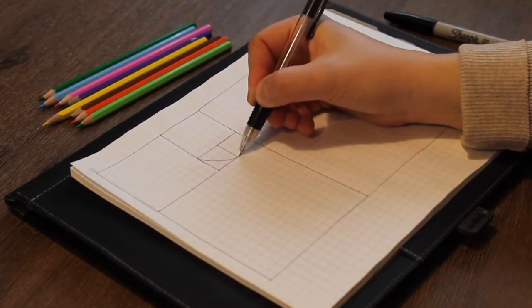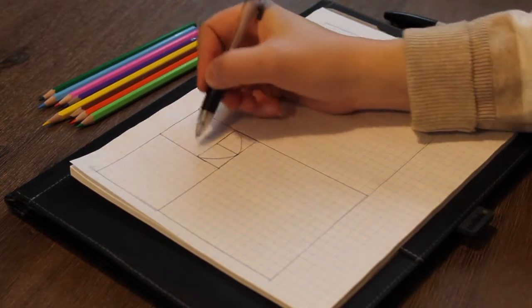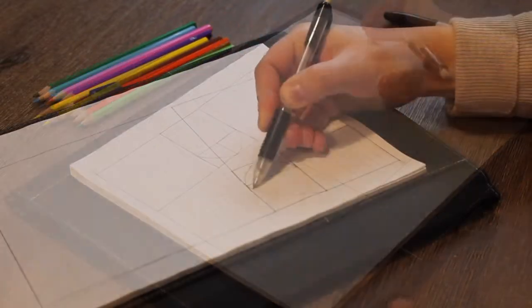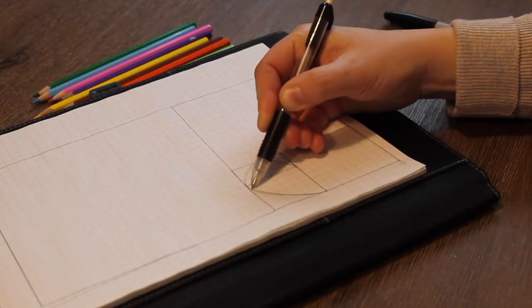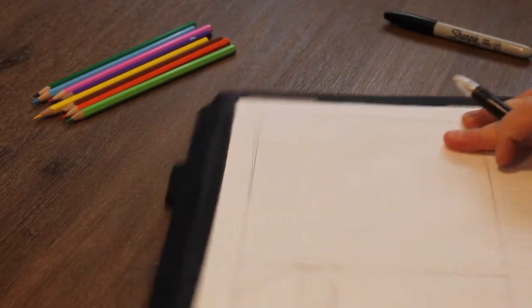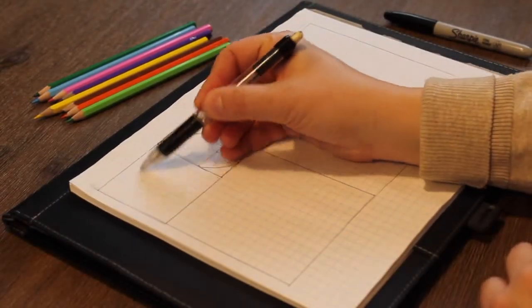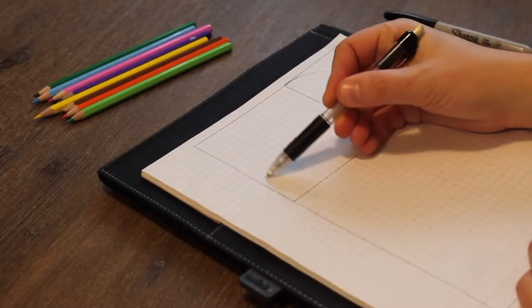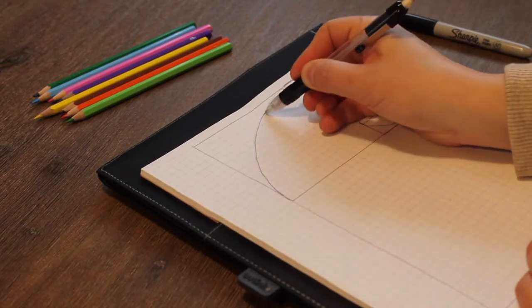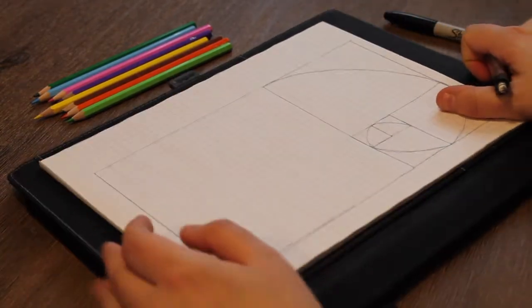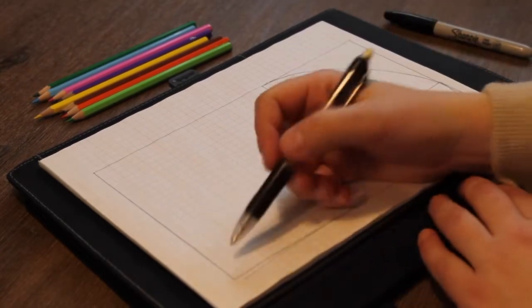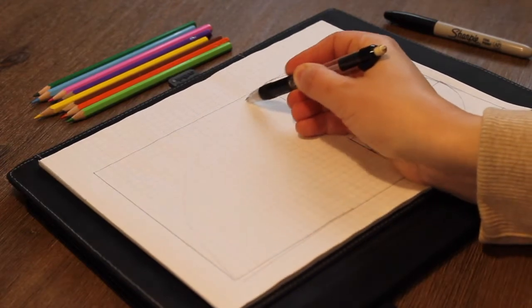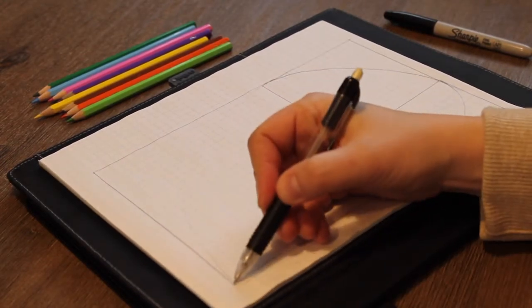Then we're going to continue this way. You would move your compass to this spot and draw another quarter circle. And then we're going to do the same this way, and then the same like this, and then the last one here. I'm trying to swing my arm around like I would a compass.